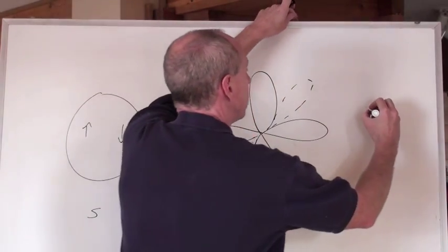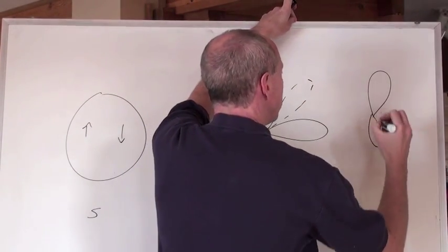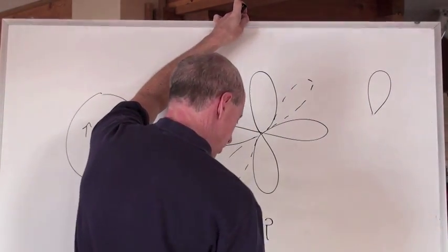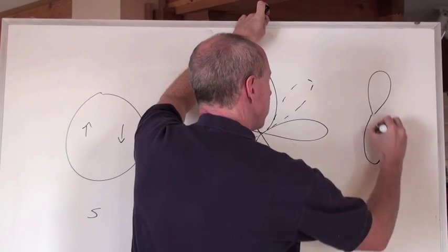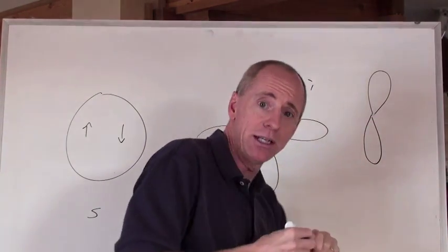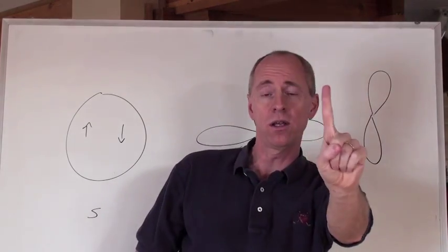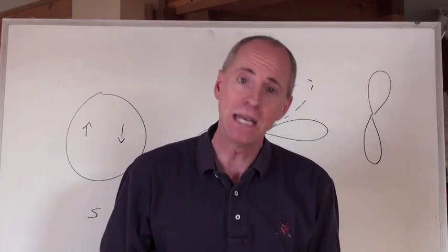The p orbitals kind of look like this. You're going to look at that and say, well, you just drew two orbitals in a kind of balloon shape there. Actually, that little balloon shape there going in the up and down direction is one suborbital for p.